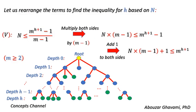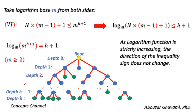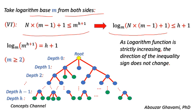Let us rearrange the terms of this inequality to find an inequality for height of the tree based on its number of nodes. Multiplying both sides by (m − 1): n(m − 1) ≤ m^(h+1) − 1. Adding 1 to both sides: n(m − 1) + 1 ≤ m^(h+1). Taking logarithm base m from both sides: log_m(n(m − 1) + 1) ≤ h + 1.